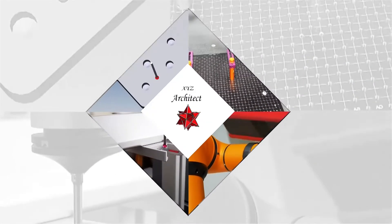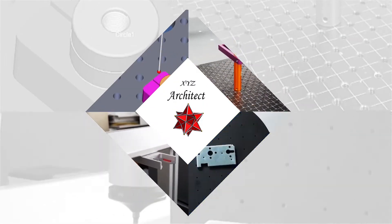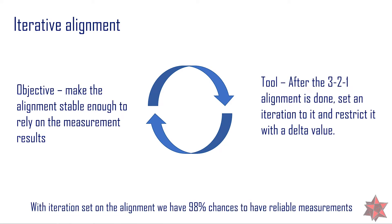This is why my latest two videos were about how to check your elements that construct your alignment, and this is why in this one we are going to talk about alignment iteration and why it is important. We must first remember 3-2-1 alignments or RPS alignments, because they are the perfect fit for the reason we have to use iterative alignments. Our objective is to make our alignment stable enough to rely on the measurement results. The tool after we make the 3-2-1 alignment is to set the iteration and to restrict it with a delta value. With this iteration we have a 98% chance to have reliable measurements.